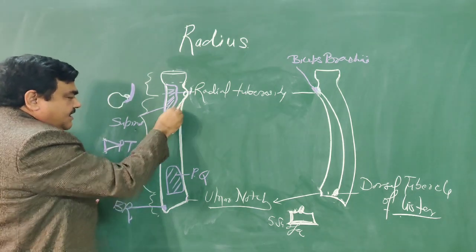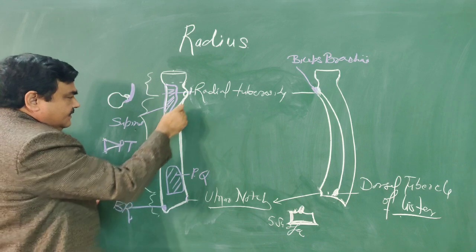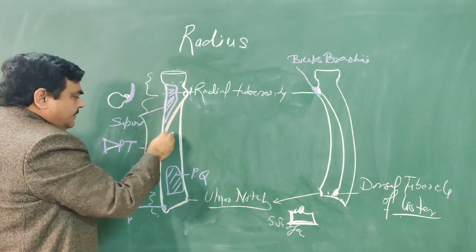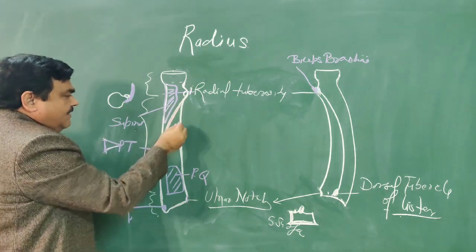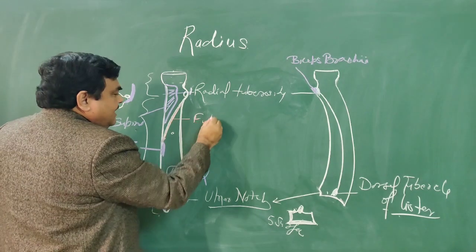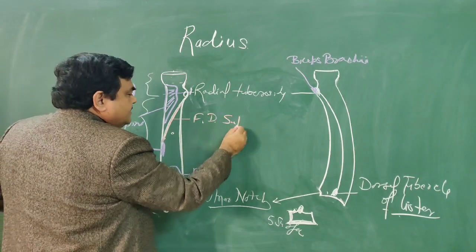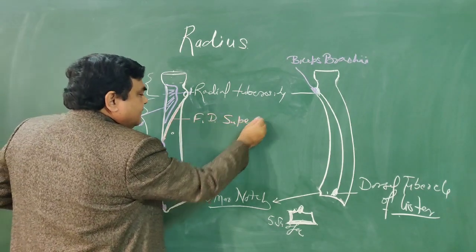This is the radial head of flexor digitorum superficialis. Flexor digitorum superficialis takes origin from this region of the radius.